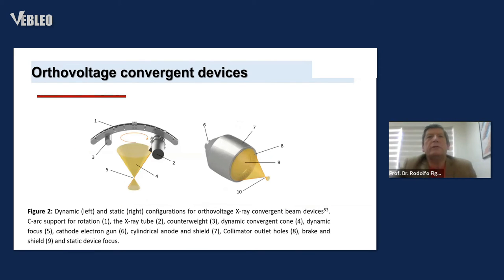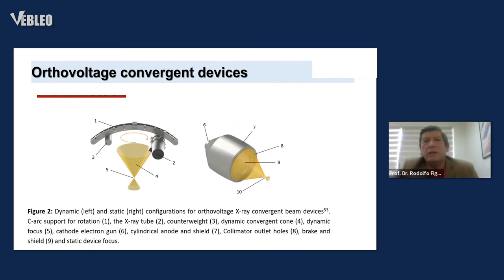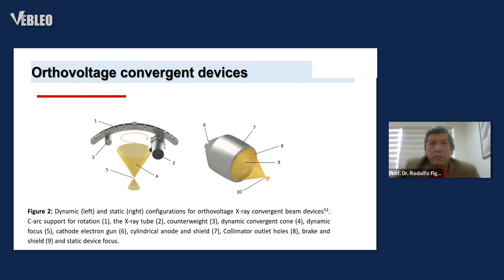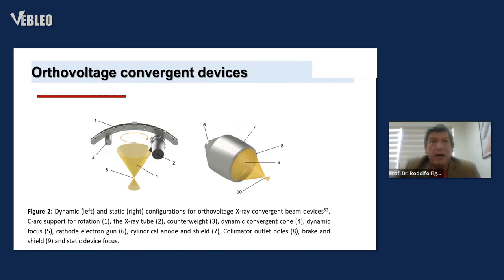Orthovoltage convergent device in development — dynamic left and static right configurations for an orthovoltage X-ray fluorescence beam device. Components include: C-Arc support for rotation, X-ray tube, counterweight, dynamic convergent cone, dynamic focus, cathode electron gun, cylindrical anode and shield, collimator, outlet hole, brake, shield, and static device focus.